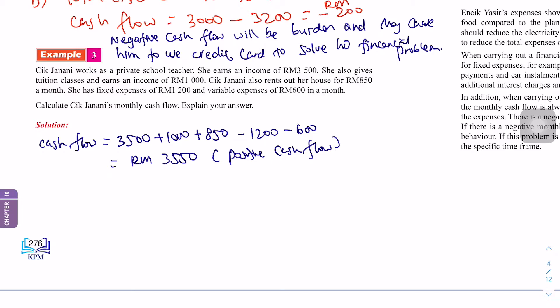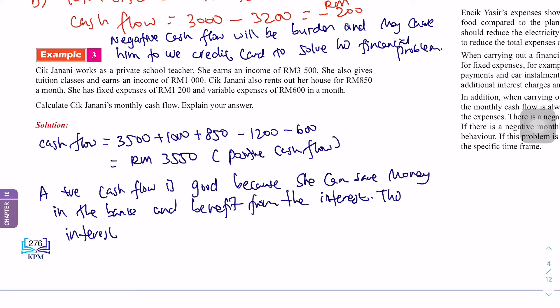So what can we explain about this situation? A positive cash flow is good because she can save money in the bank and benefit from the interest. Kadang-kadang kalau kita simpan dalam bank, kita akan dapat interest kan? Interest tu tambahan daripada investment kita. So, kita untung lah. So this interest is a passive income for Cik Janani.